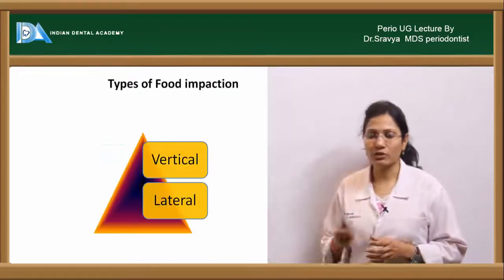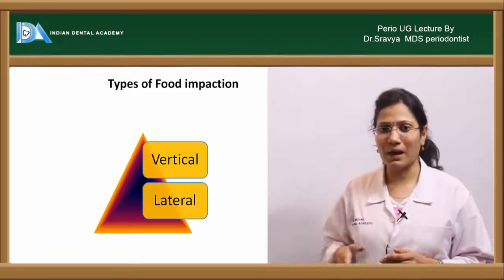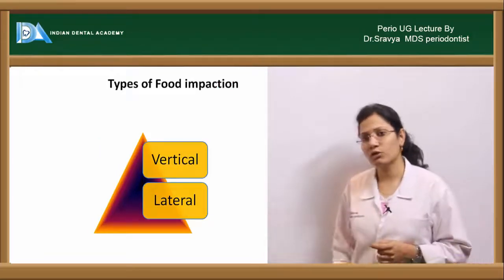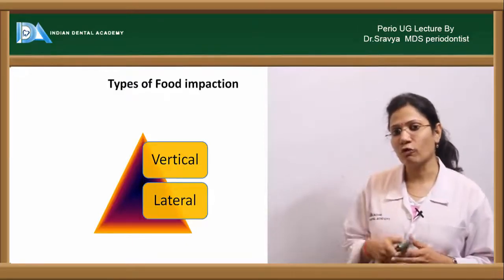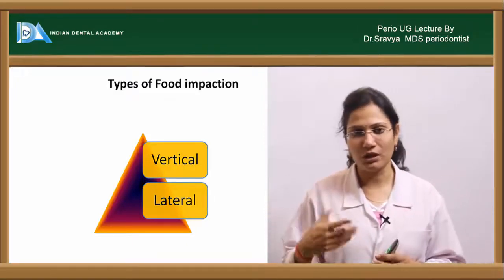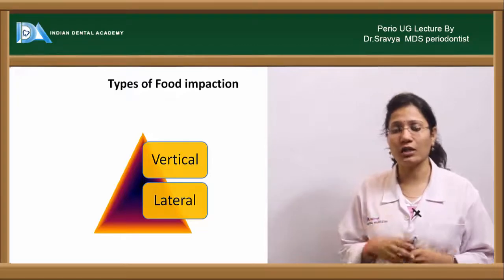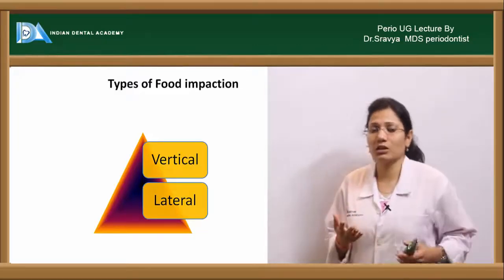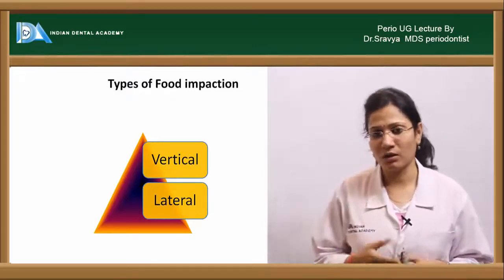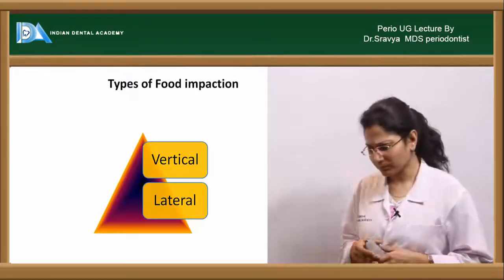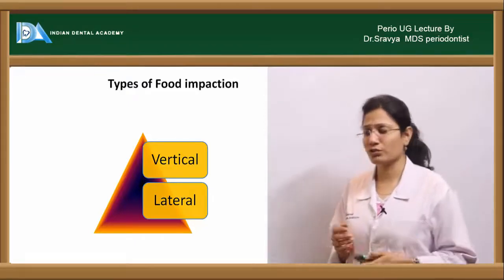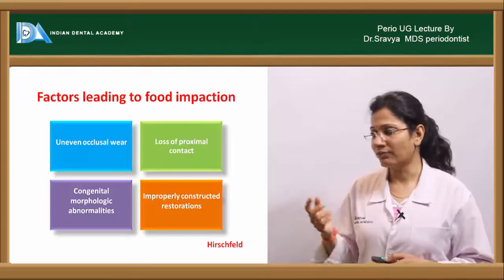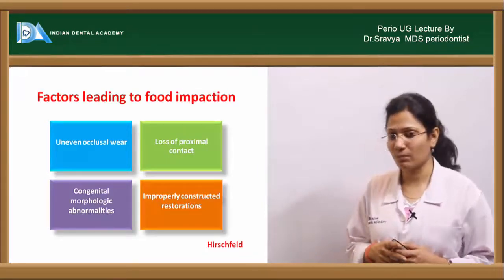There are two types of food impaction: vertical food impaction and lateral food impaction. The vertical food impaction is mainly caused by the four factors Hirschfield mentioned — loss of proximal contact, uneven occlusal wear, overhanging restorations or other prosthetic or restorative problems, and congenital morphologic abnormalities. The cusps which cause it are the plunger cusps.